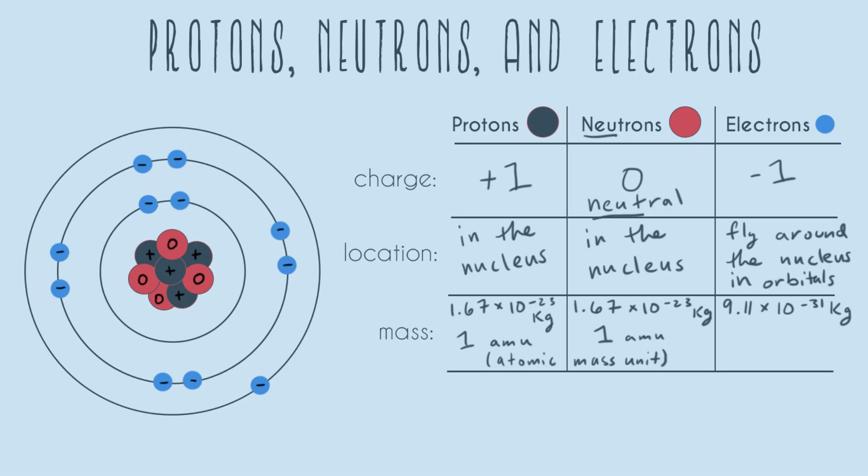So it's accurate to say that protons and neutrons weigh 1.67 times 10 to the negative 23rd kilograms and that they also weigh 1 AMU. That's the same exact thing. And so on this scale, an electron weighs 0.0005 AMU.